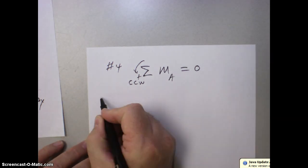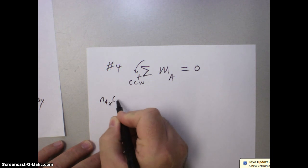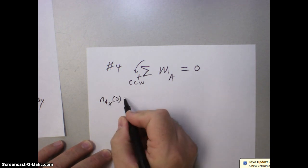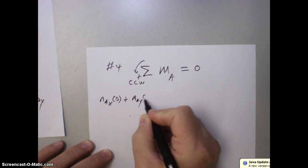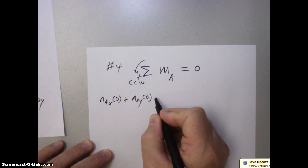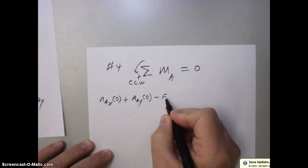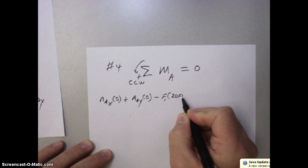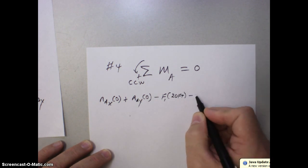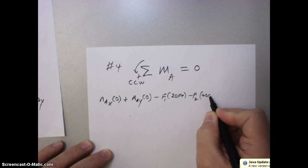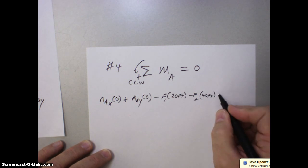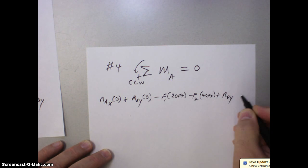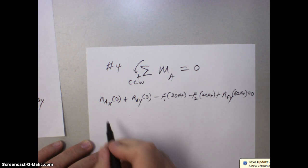So let's write down RAX times zero distance plus RAY times zero distance. The negative direction from F1, it was, distance was 20 feet. The negative direction for clockwise for F2, it was 40 feet. And we have a positive direction because it was counterclockwise, RGY, and that was 60 feet. And that equals zero.